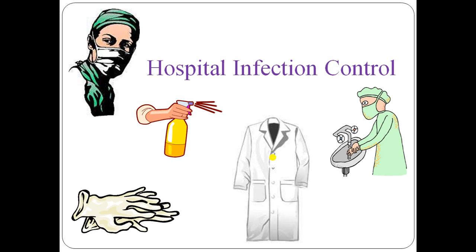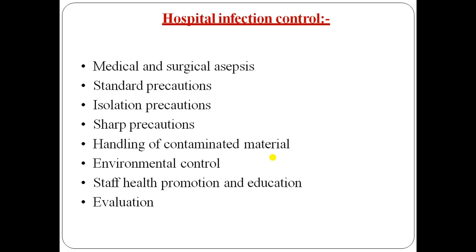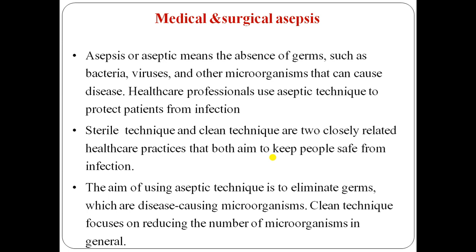Now we will discuss hospital infection control. There are several methods: the first is medical and surgical asepsis, the second is standard precautions, isolation precautions, sharp precautions, handling of contaminated material, environmental control, staff health promotion and education, and evaluation. Asepsis means the absence of disease-producing microorganisms such as bacteria, viruses, and other microorganisms that can cause disease.